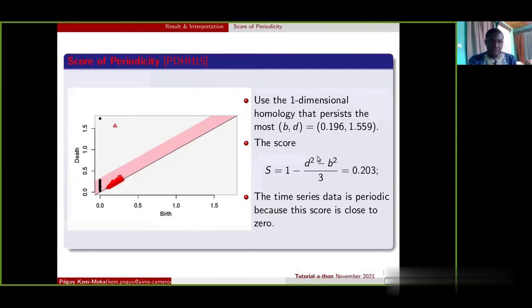So in the persistent diagram, the points that are far away from the diagonal represent true features, and the ones that are close to the diagonal are regarded as noise. So the further apart the points are from the diagonal, the higher the persistence is. From this persistent diagram, we extracted the feature called score of periodicity using this formula.